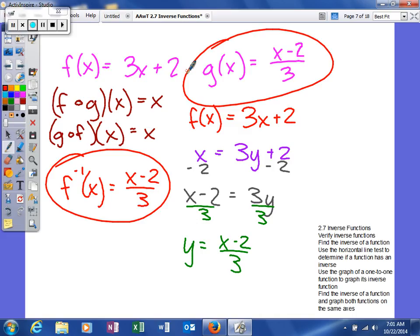So either of these methods, the first method that we learned was to find f of g of x equal to x, and also g of f of x equal to x. So you can use that method, or you can take one function and find its inverse. If it's equal to the other function, then obviously the two functions are inverse functions.